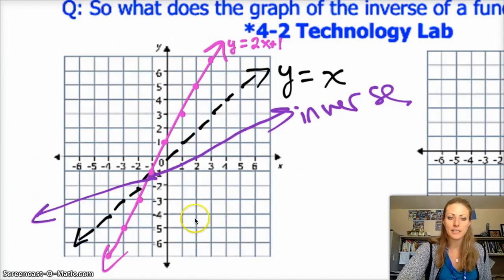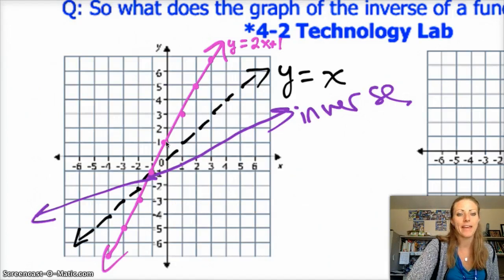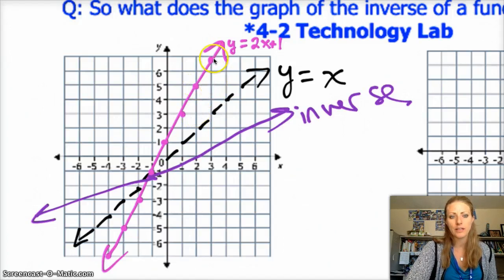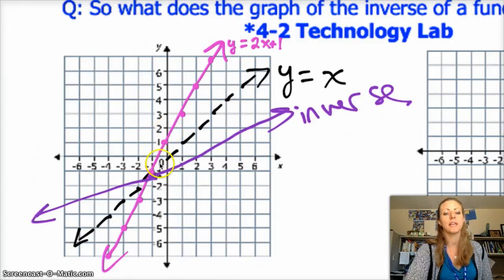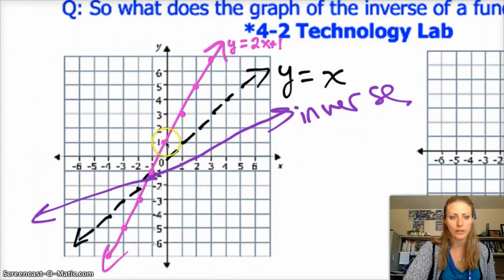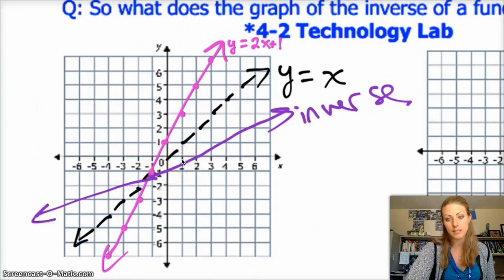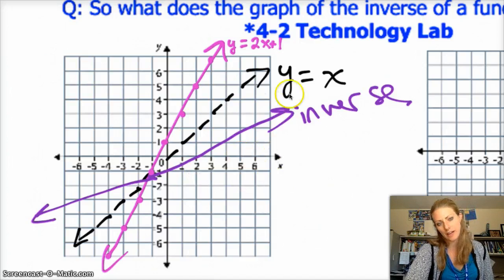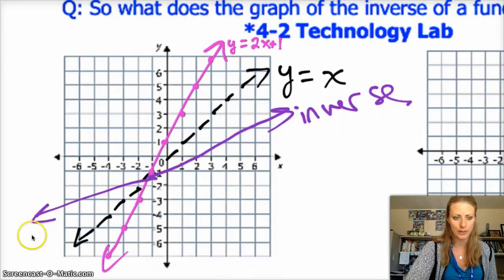So if you look here, we have the point 0, 1, then 1, 3, then 2, 5, and then 3, 7. And the inverse should go through the opposite — the x and y's are switched. So if this goes through 0, 1, then the inverse should go through 1, 0. And this point that was 1, 3 is now 3, 1. Note that the signs don't change — it only switches the x and the y.